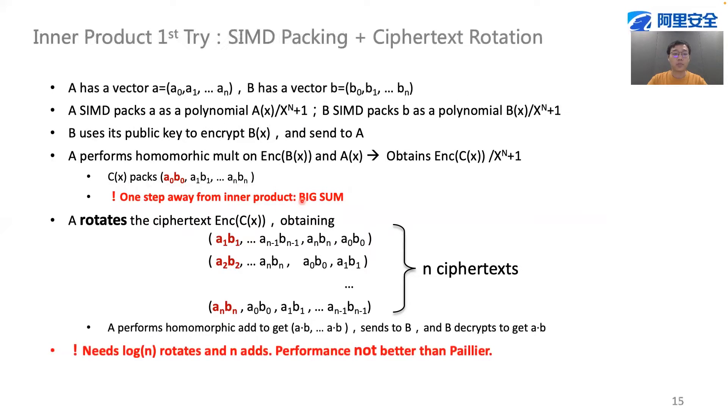Now, let's see how to implement inner product with homomorphic encryption. The first idea is to use SIMD packing, as we introduced before. But as we said, SIMD packing enables element-wise multiplication between two vectors. What we want is inner product.